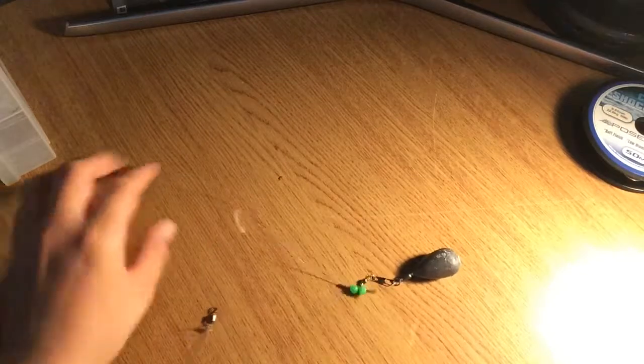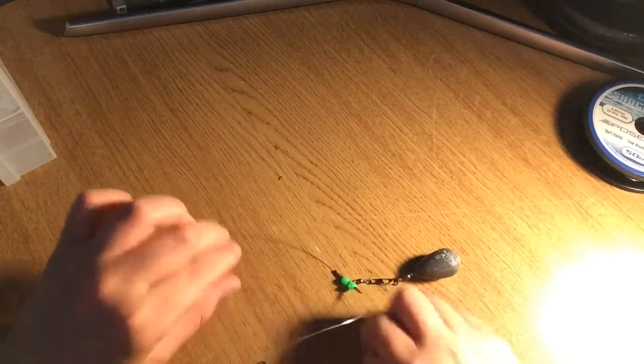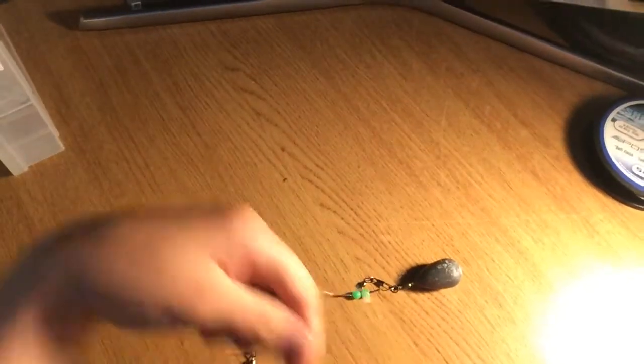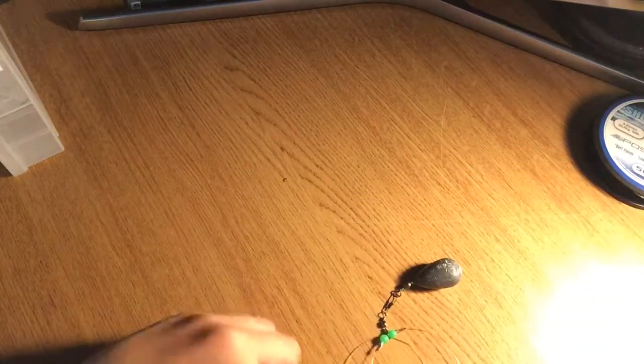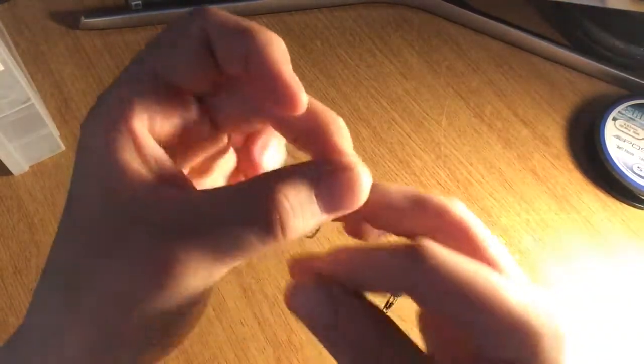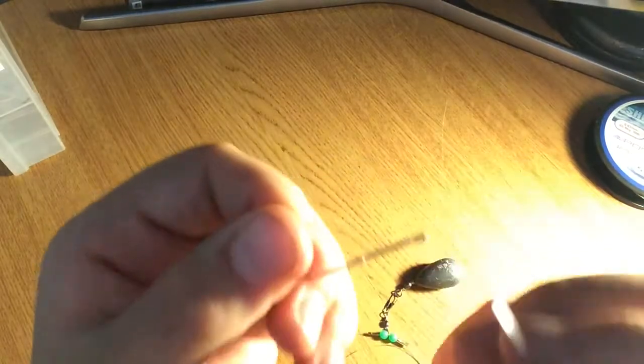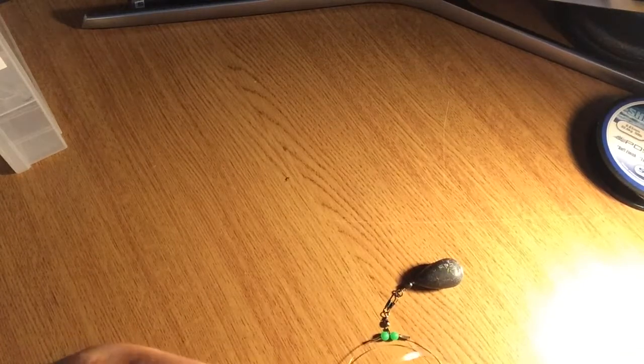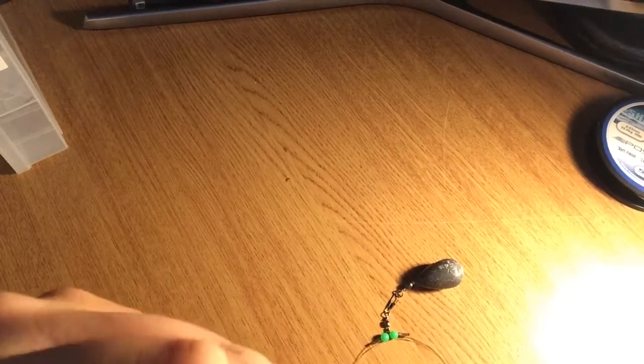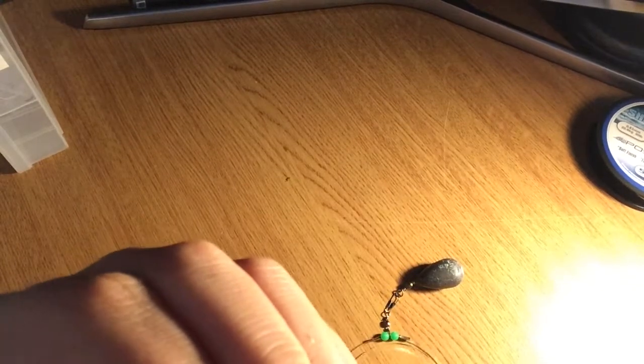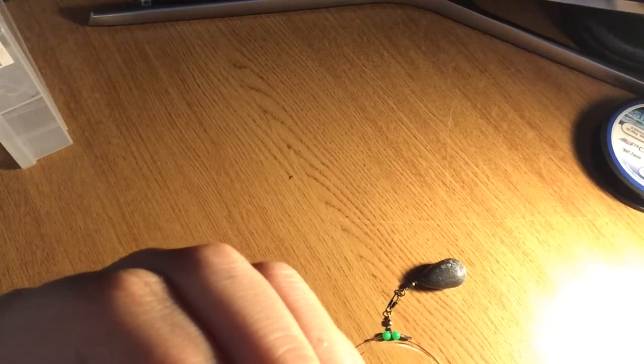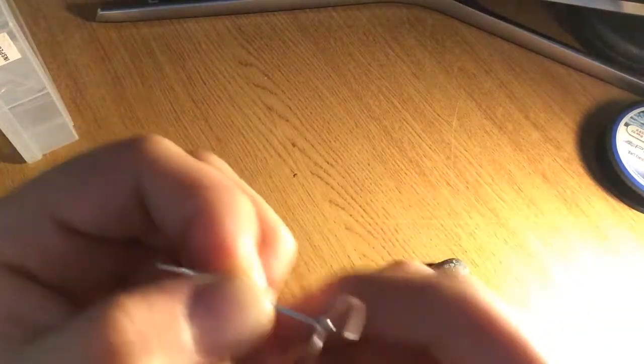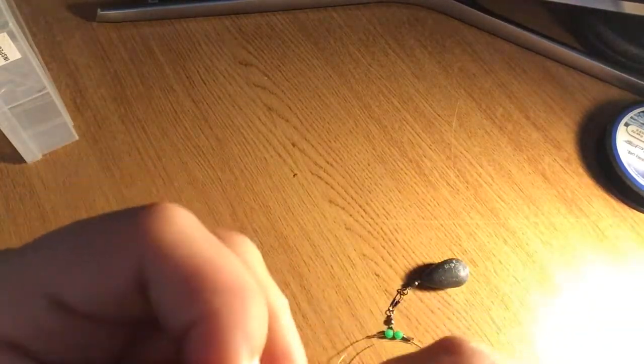So next, you grab the end that's not got the swivel on it, this bit here. You grab your hook. You do one loop through the hook. It doesn't matter which way, through the hook. Like so, through here. Give it some line, give it some line.